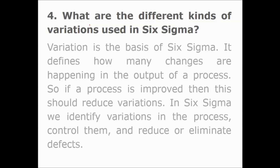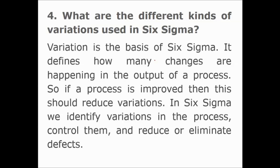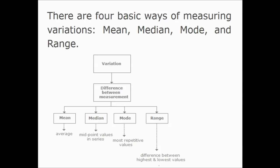What are the different kinds of variation used in Six Sigma? Variation is the basis of Six Sigma. It defines how many changes are happening in the output of a process. If a process is improved, this should reduce variations. In Six Sigma, we identify variation in the process, control it, and reduce or eliminate differences. There are four basic ways of measuring variation: Mean, Median, Mode, and Range. Mean means average; Median means the midpoint in the series; Mode means the most repetitive value; and Range means the difference between the highest and lowest value.